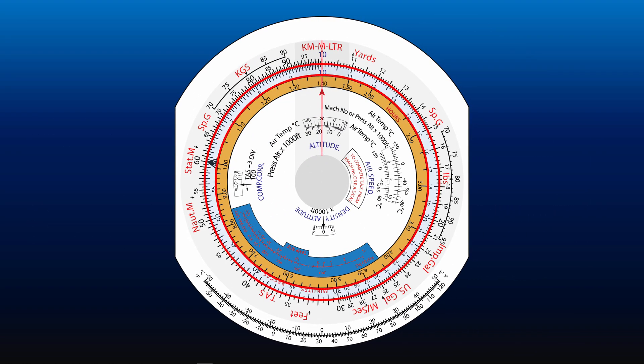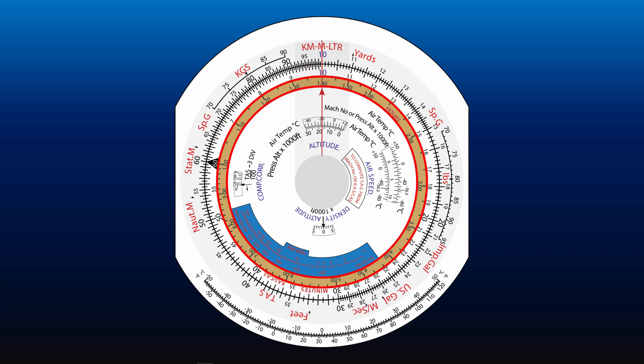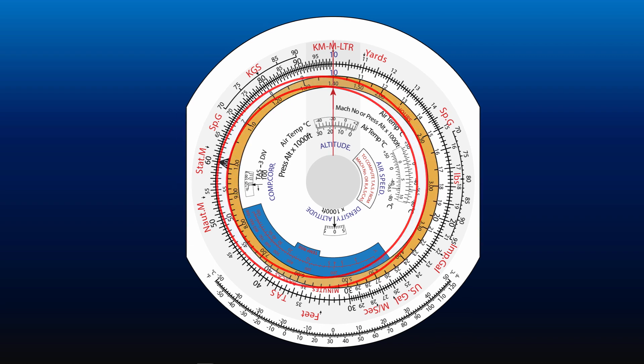You notice the white inner scale is graduated in minutes for distance and time calculations, while the inner orange scale is graduated in minutes and hours. Let's now see how the inner orange scale is used to calculate leg time over one hour.